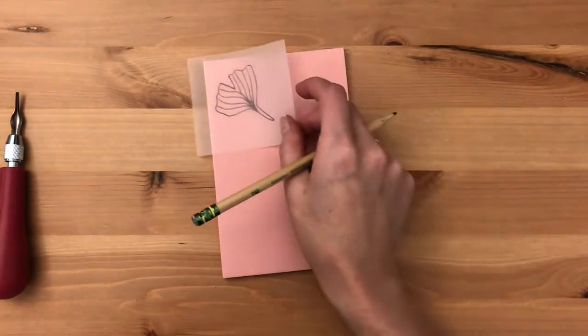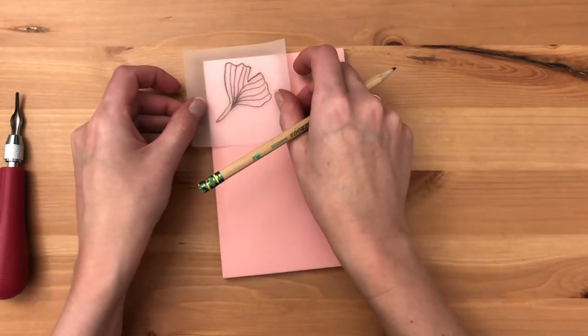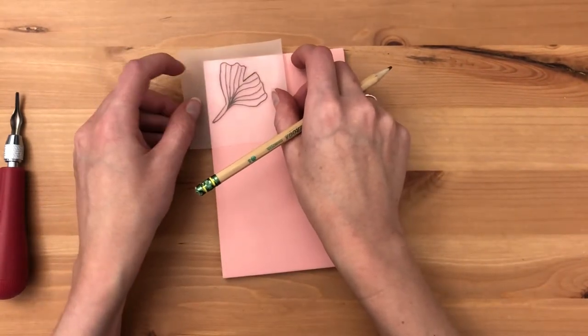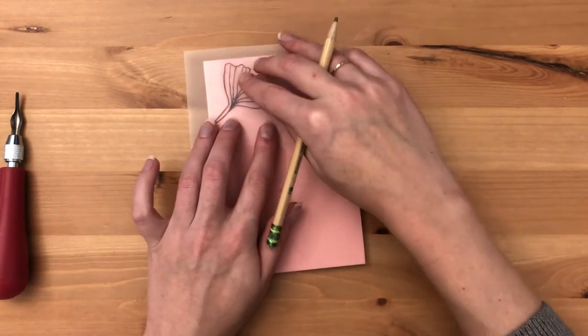Once it's on the tracing paper put it over the carving block pencil marking side down and go back over the image. That will transfer the lead to the block.